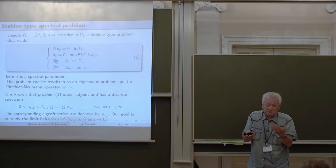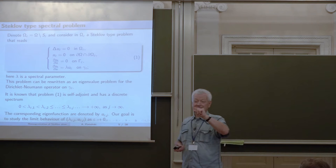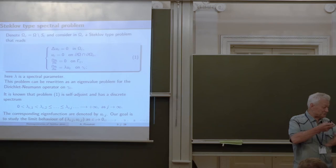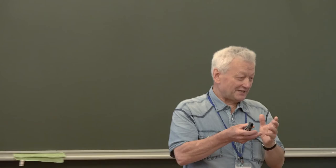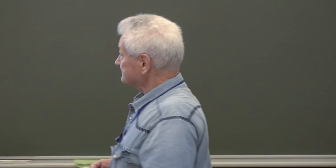Formally, there is no place to impose the Steklov-type boundary condition in the limit when the thickness goes to zero. The question is how to transform the spectral relation in such a way that it reflects the limit behavior of these eigenpairs.